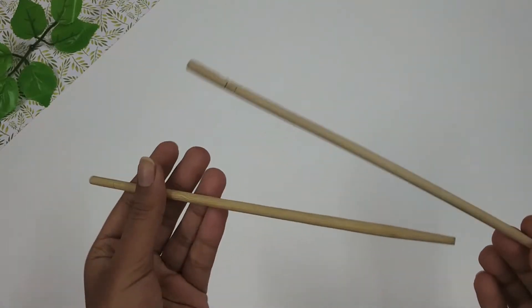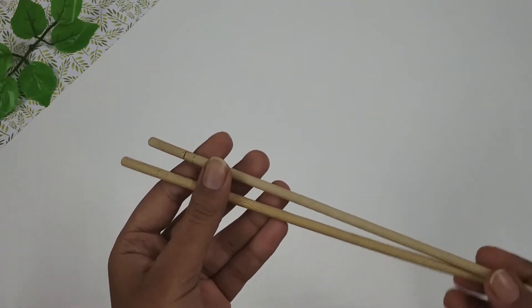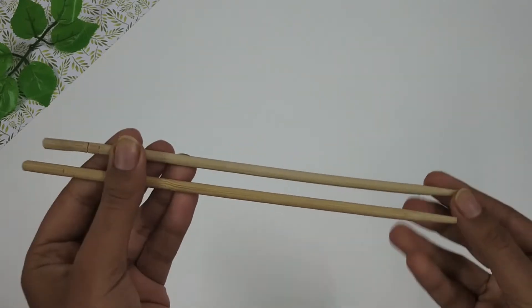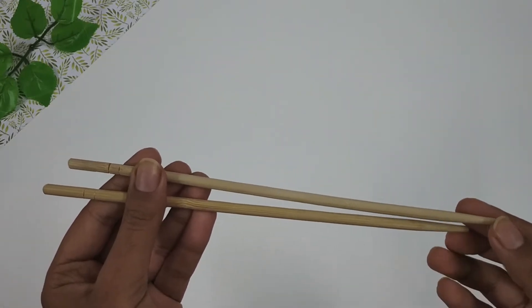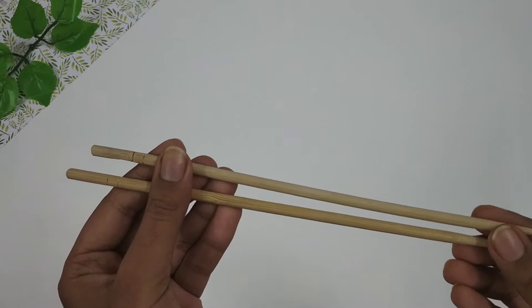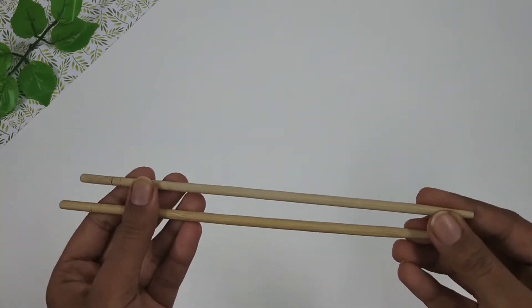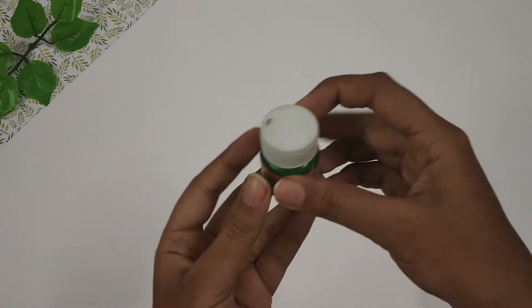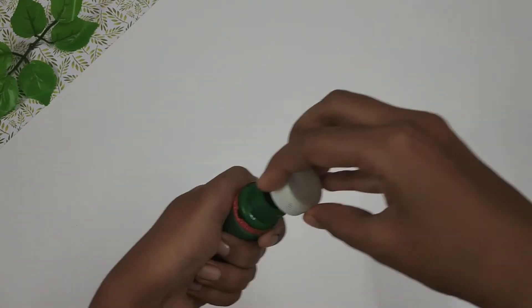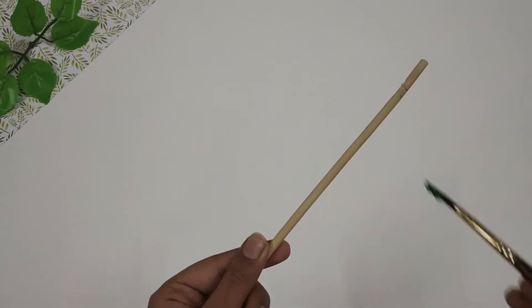First, I'm taking some wooden sticks to create the stem of the flower. You can use broomstick, old paint brushes, or metal wires instead of this. Next, I'm going to take some green paint and paint the stem.